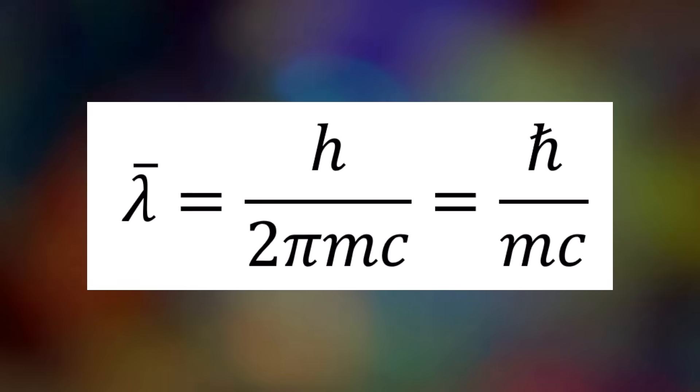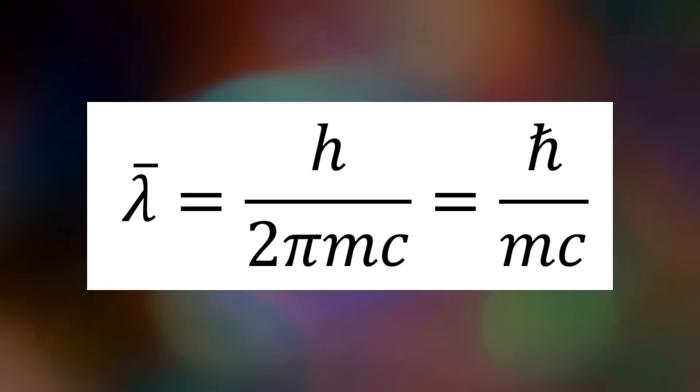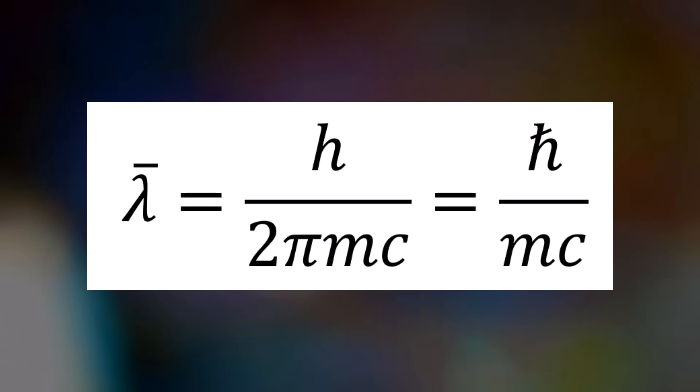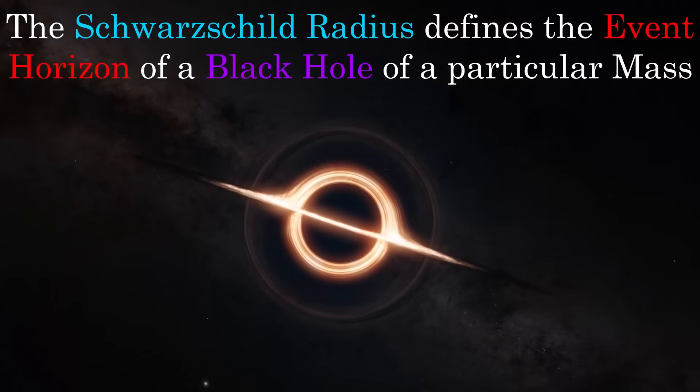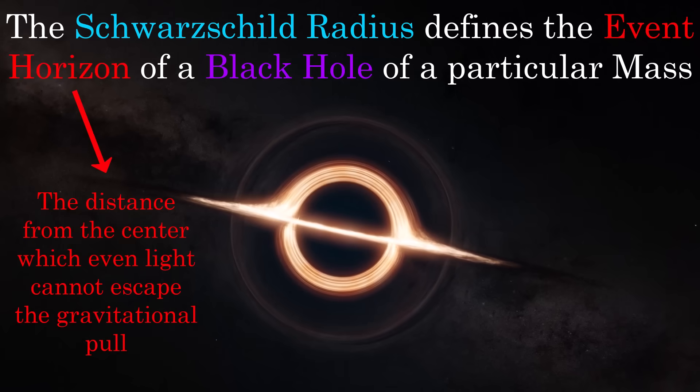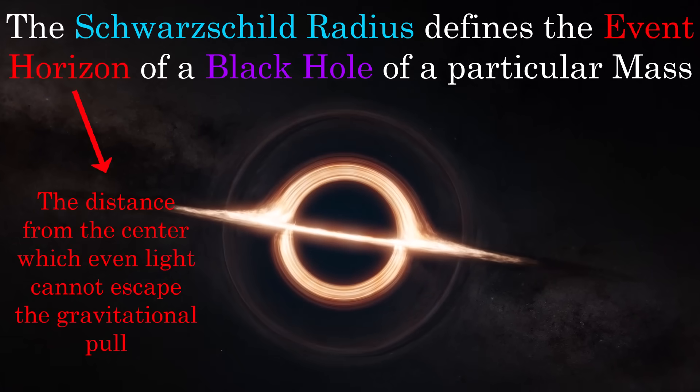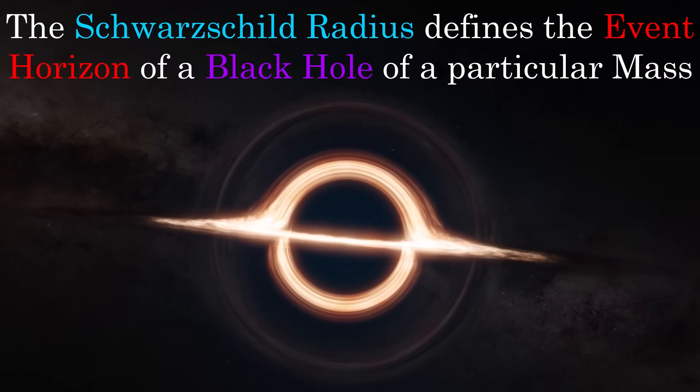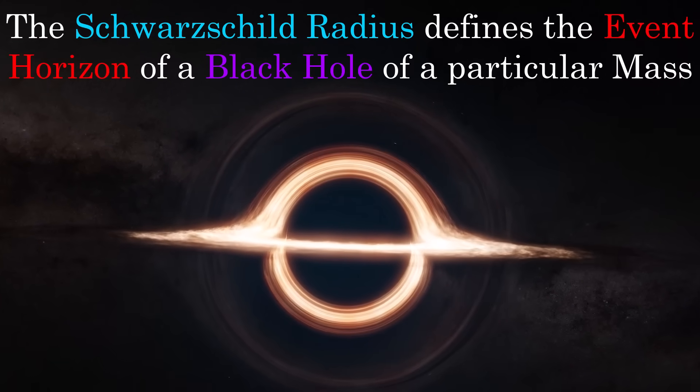Anyway, that is the reduced Compton wavelength, and we reach the Planck length by comparing this to the Schwarzschild radius, which is the radius of the black hole formed by an object of a particular mass. Essentially this describes the point from the centre of a black hole of a particular mass at which the strength of its gravity would prevent light from escaping.